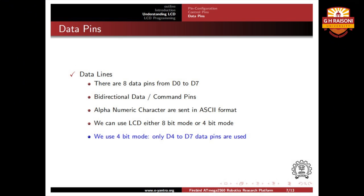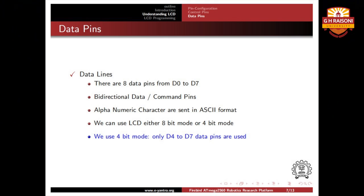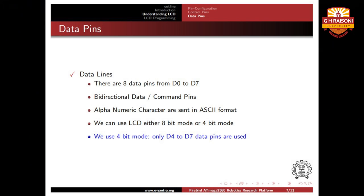Apart from the control pins, we have data pins. Data pins are used to carry data and are capable of carrying 8 bits of input data — there are 8 data pins from D0 to D7, where each pin holds 1 bit of data. These pins have bidirectional data, meaning data can be in input or output mode. Alphanumeric characters are sent in ASCII format. We can use the LCD in 8-bit mode or 4-bit mode. In 4-bit mode, pins D4 to D7 are used, whereas in 8-bit mode, all pins from D0 to D7 are used.